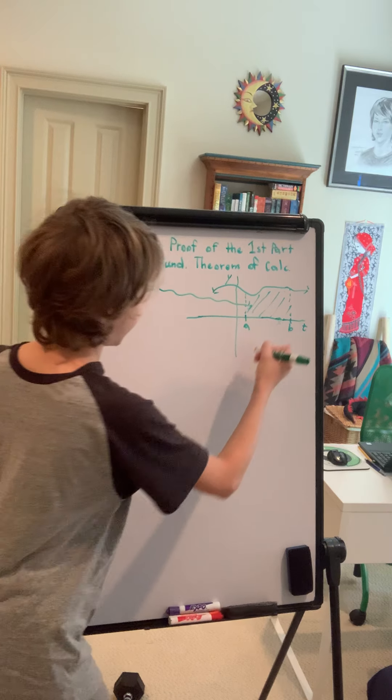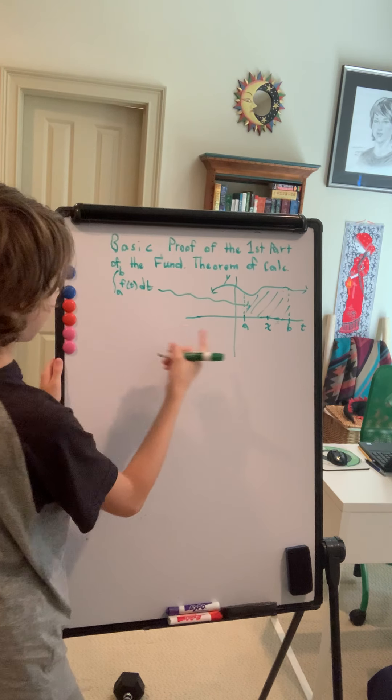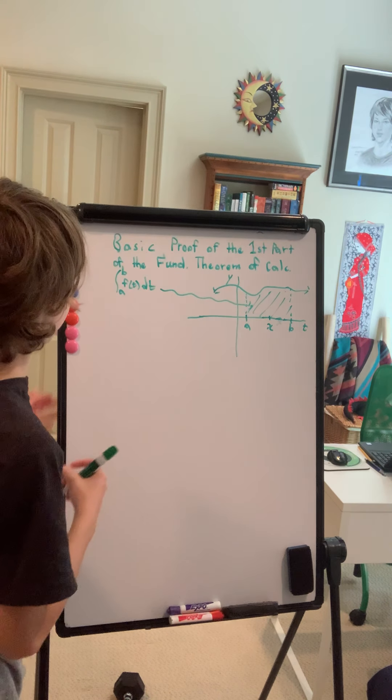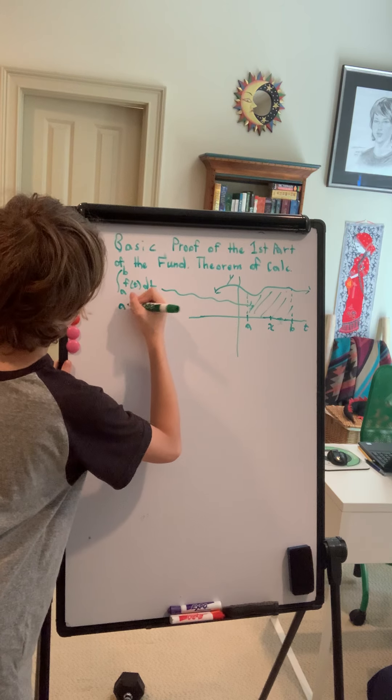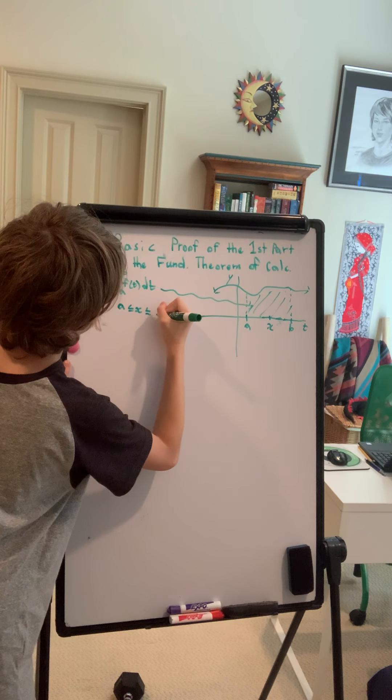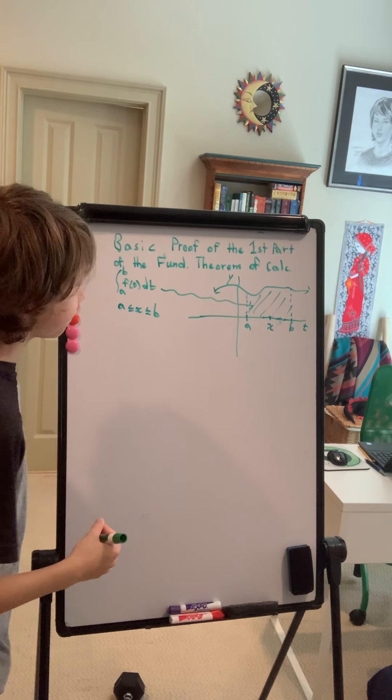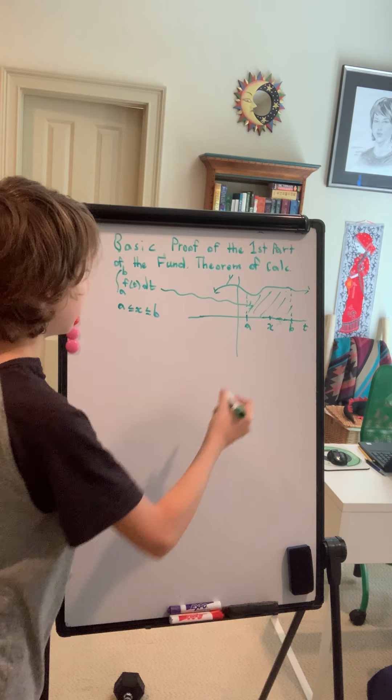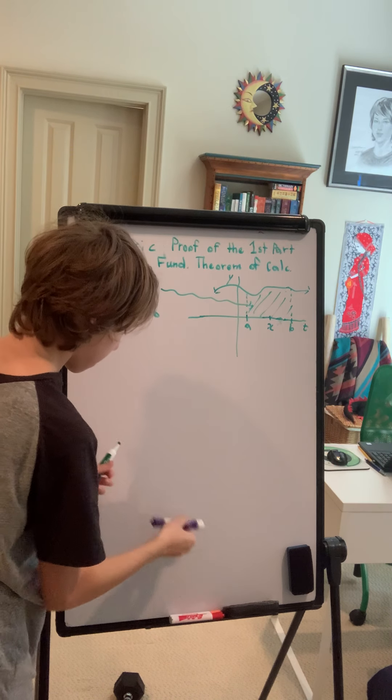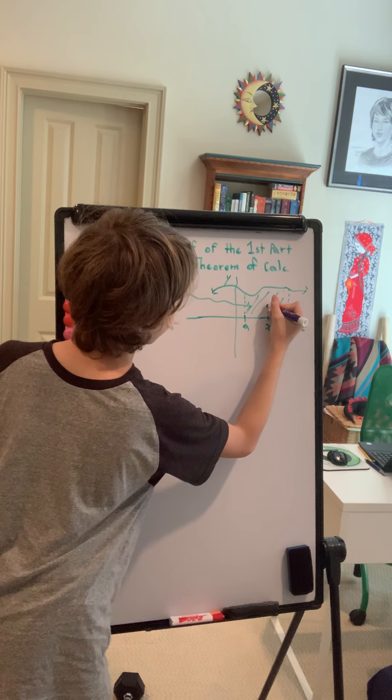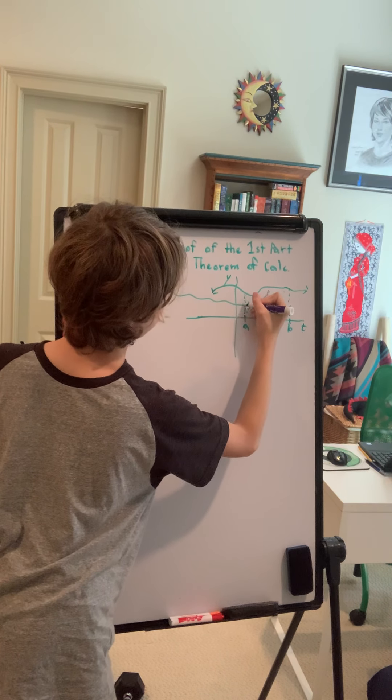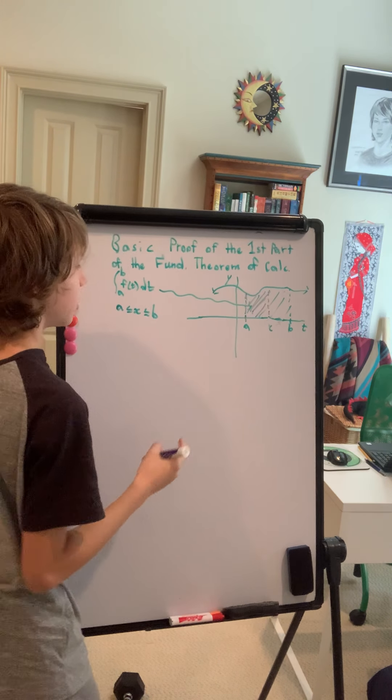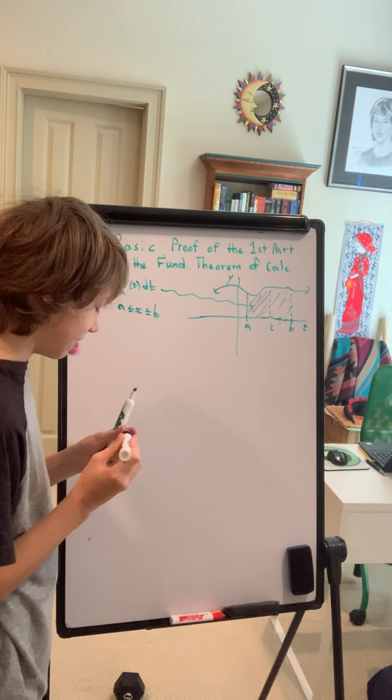Let's consider some other point x here. And this is just any random point. It doesn't necessarily have to be in the middle. It can be equal to A. It can be equal to B. We can write that x is somewhere between A and B. Just like that. And why don't we consider the area from A to x? Let's consider the area from A to x.